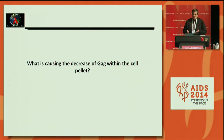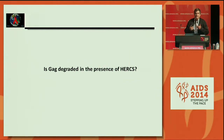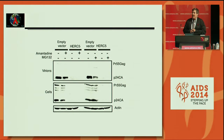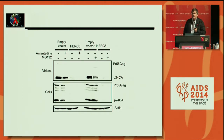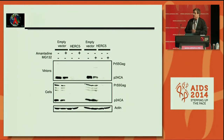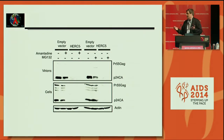We then asked what was causing the decrease in GAG within the cell pellet. The first possibility was that HERC5 causes GAG to be degraded. In a virus release assay, we treated with amantadine, which inhibits the lysosome, or MG132, which inhibits the proteasome. Neither treatment rescued virus release into the supernatant or intracellular GAG levels. This showed us that GAG degradation via the proteasome or lysosome was most likely not the mechanism.